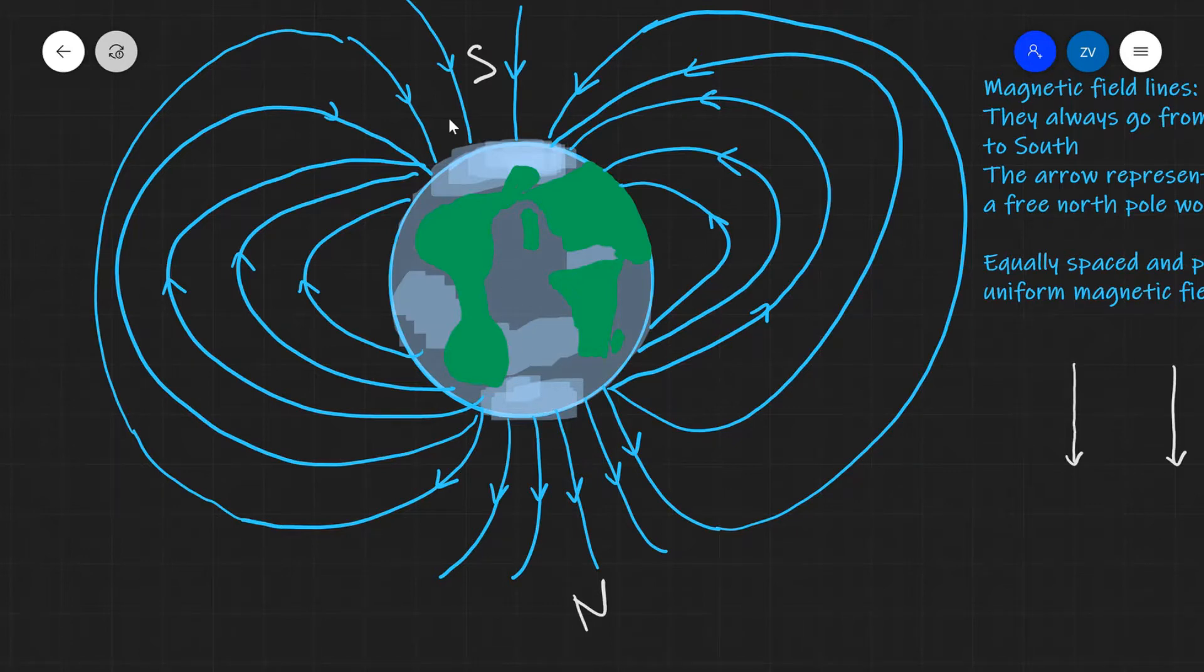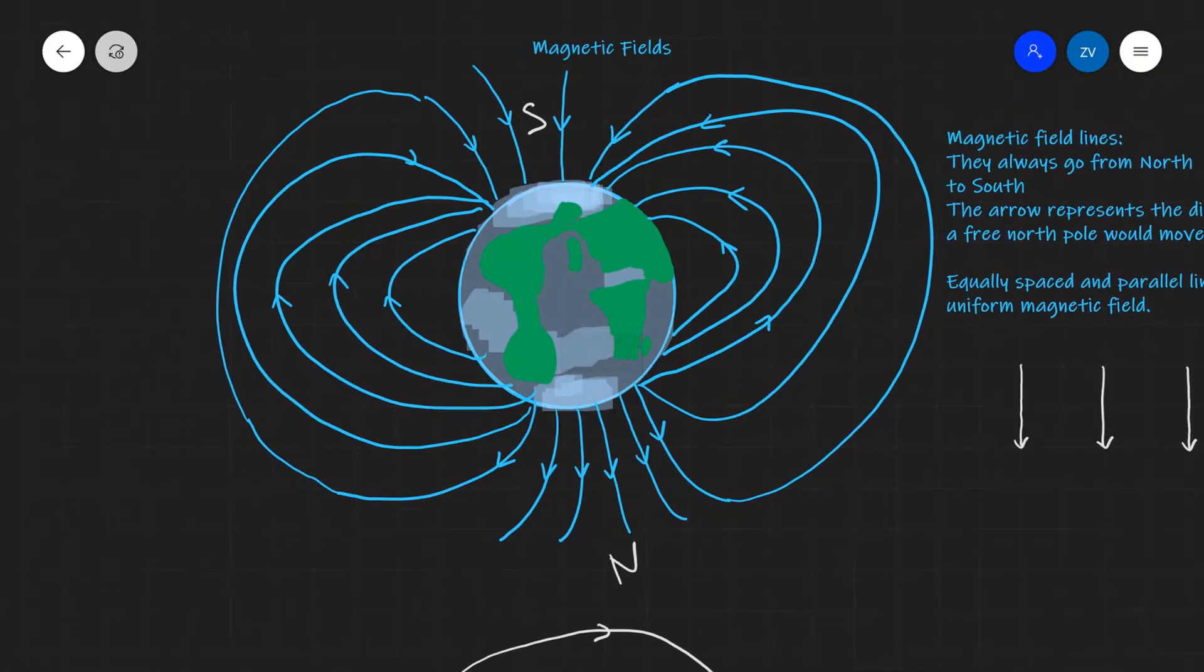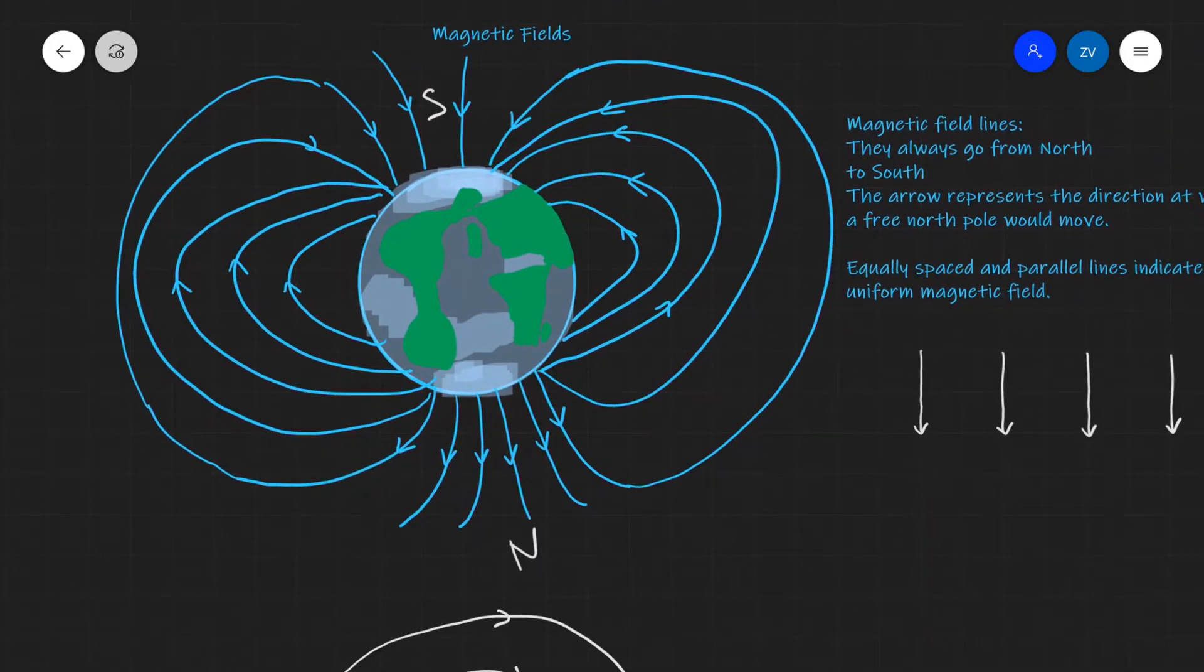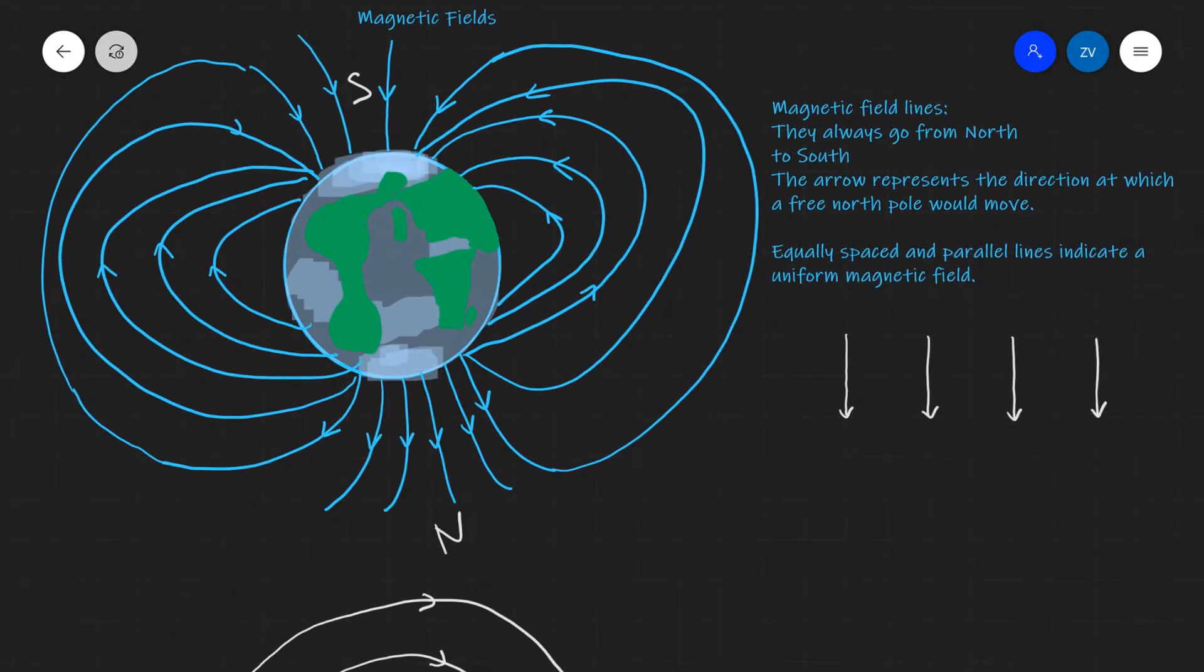There are a few rules we need to consider, and I've summarized them here on the right-hand side. First off, all magnetic field lines will always go from north to south.